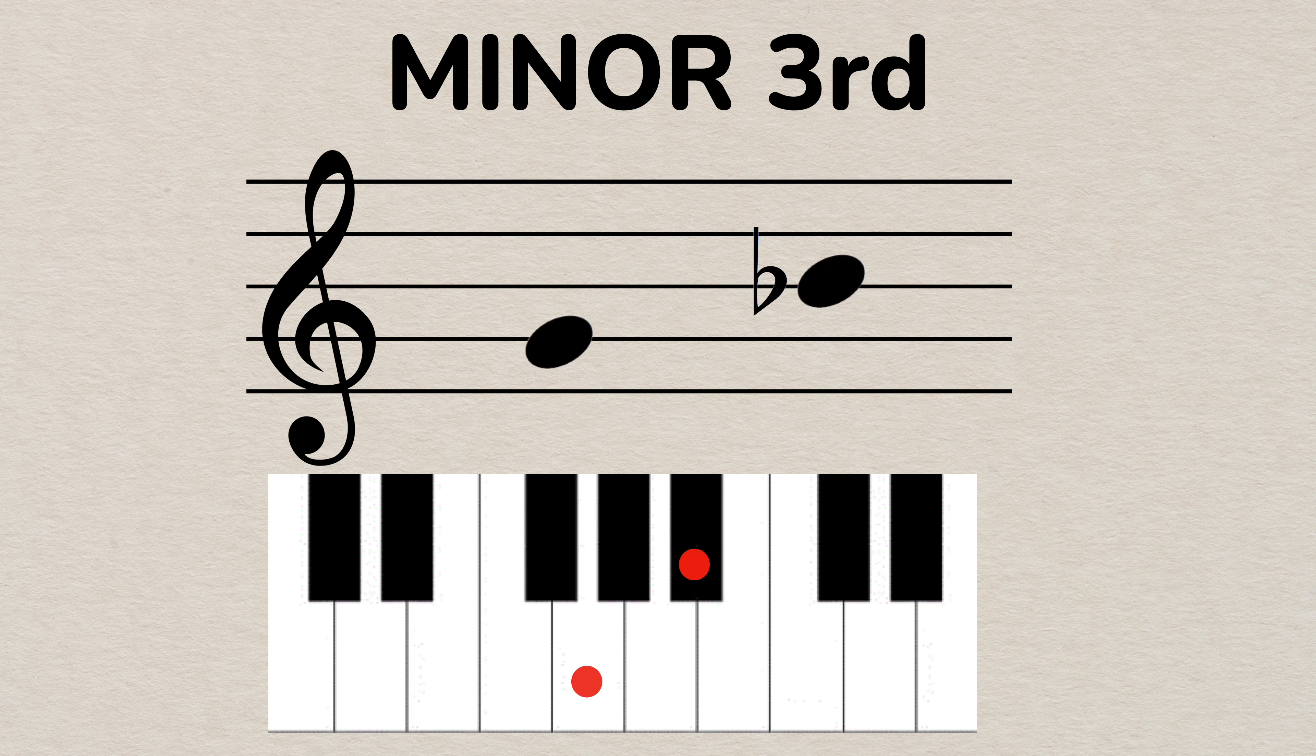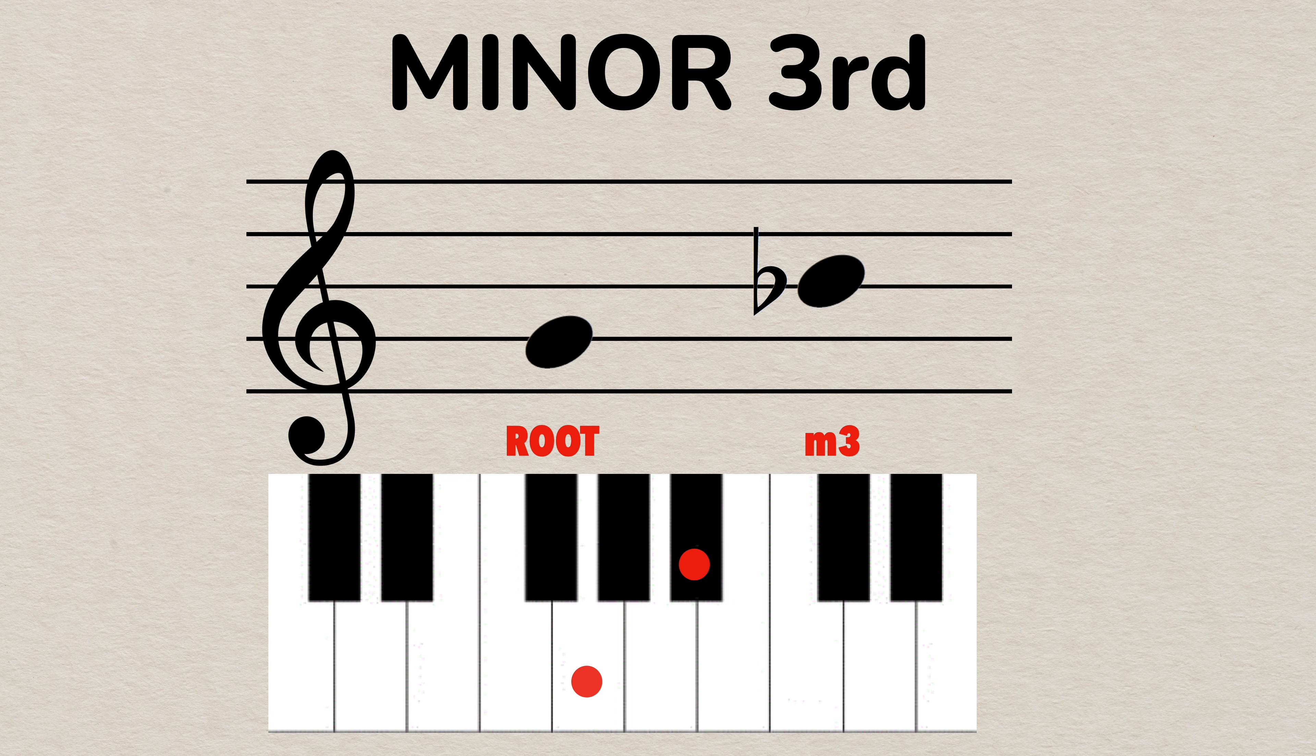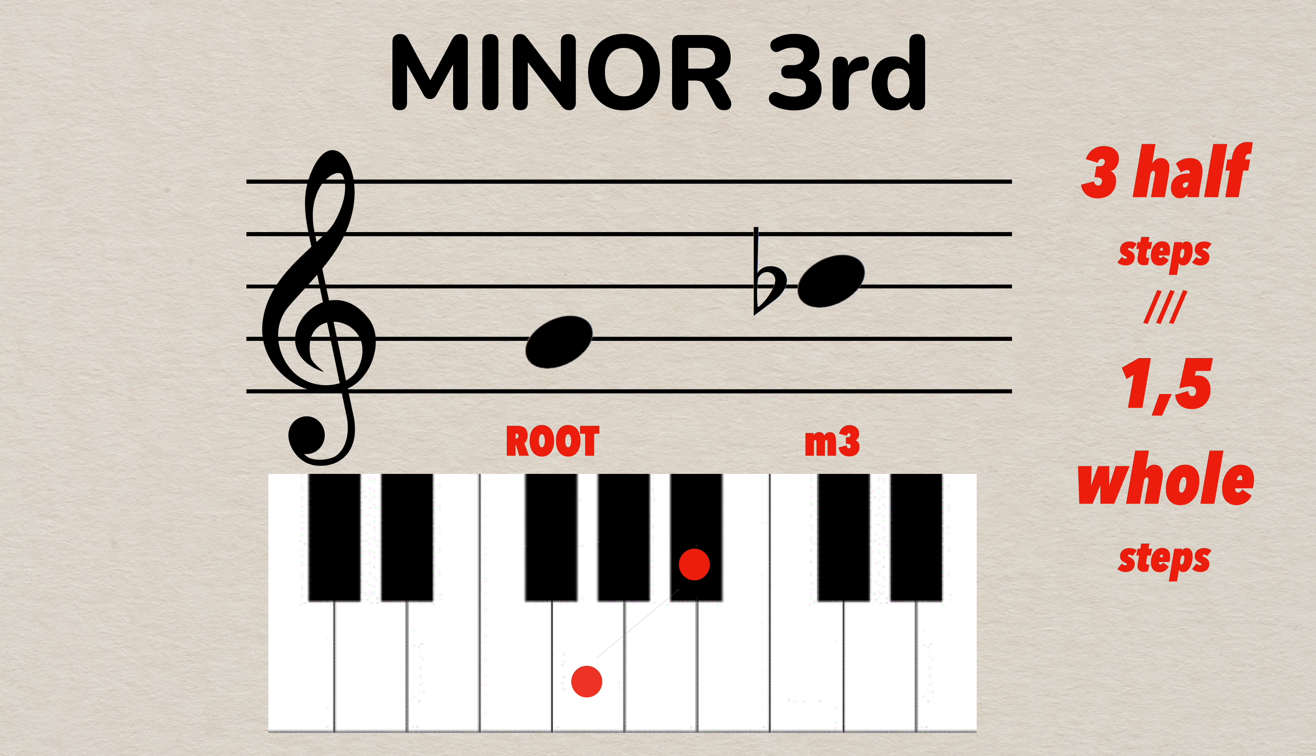Another example of a minor interval is a minor third. For example, if the root note is G, the minor third interval note would be B flat which is exactly three half steps or one and a half whole steps above G. Any interval that is three scale degrees apart and has this distance is called a minor third.